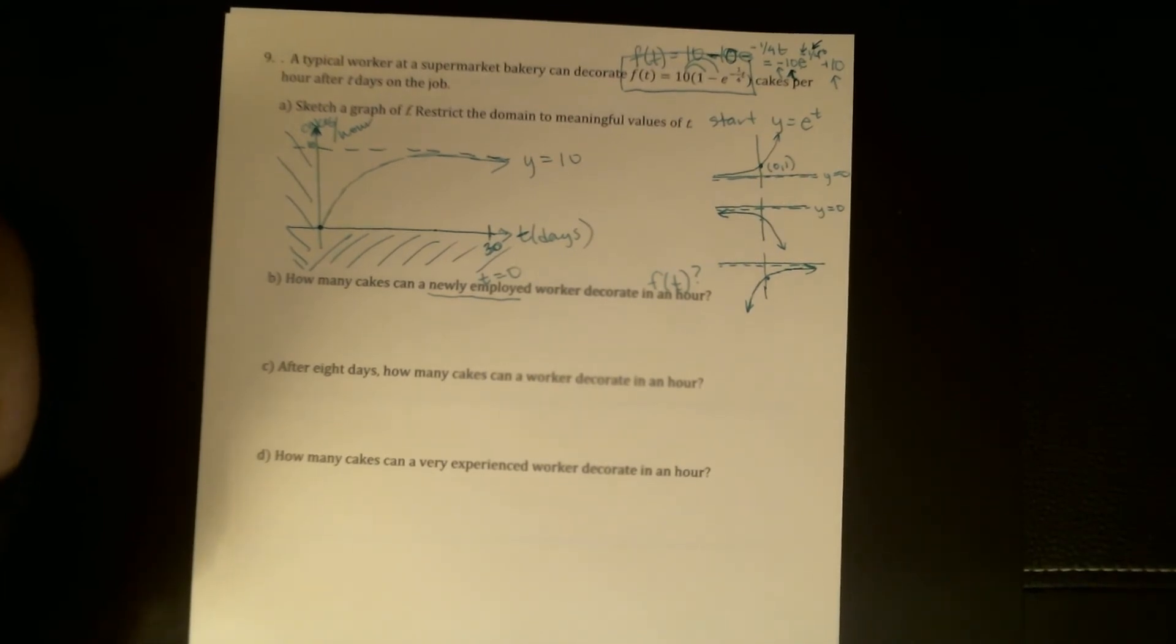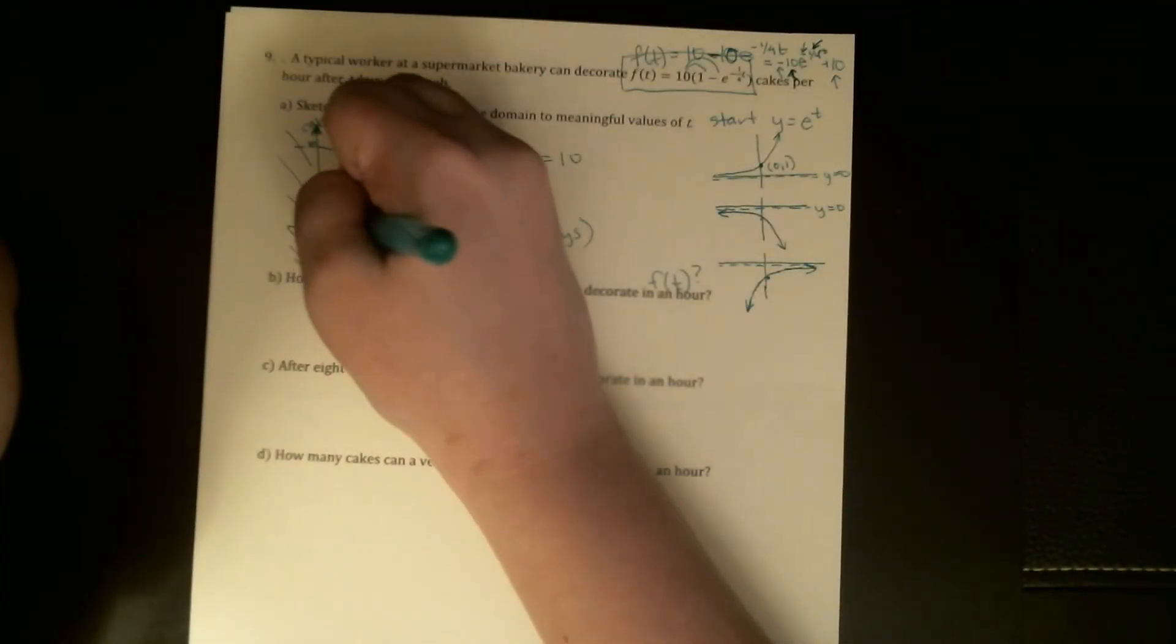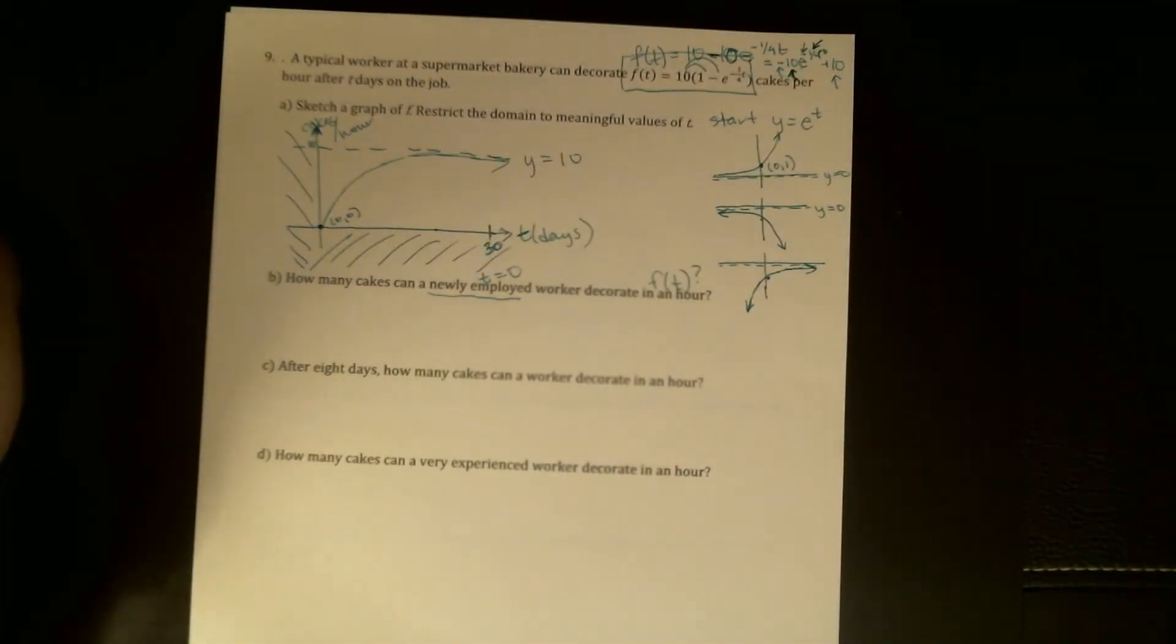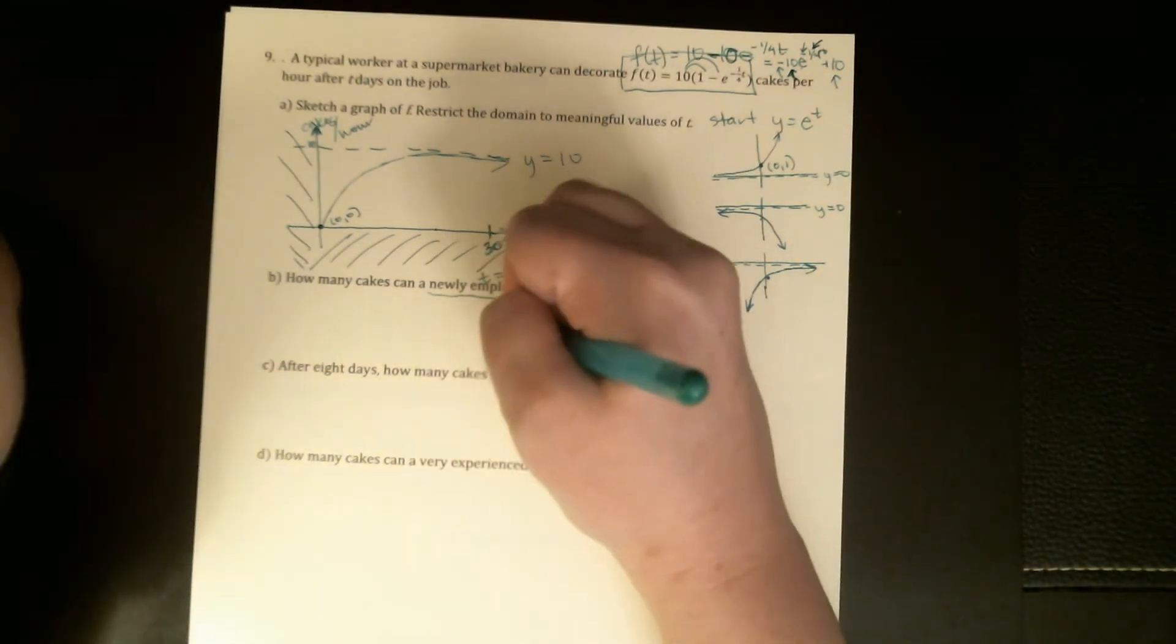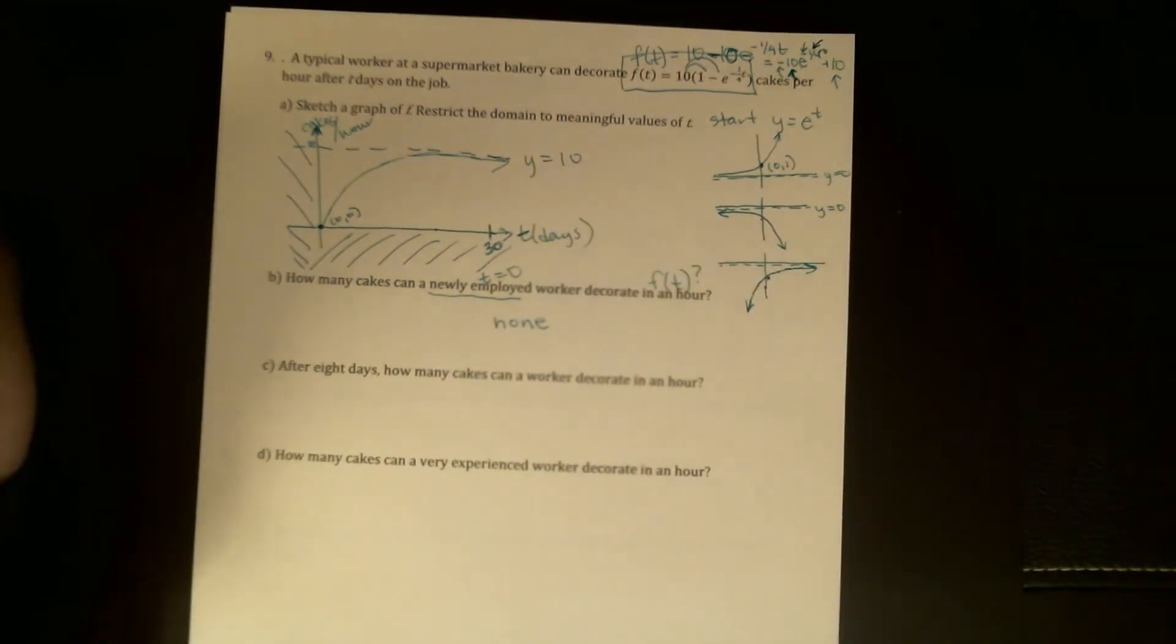So when you first start your job, t equals zero, how many cakes can you decorate in an hour? If you want to go back and check and plug in, you can. But we already found that this goes through (0,0). So we know that the answer is none. Apparently, they are completely useless when they start. They do not know how to decorate any cakes, no cakes per hour.